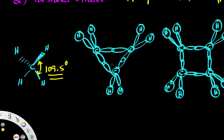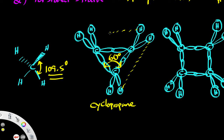With cyclopropane we have an internal angle of approximately sixty degrees, which is going to be much lower than our desired one hundred and nine point five. So this is definitely going to have Baeyer strain. We also have a little bit of eclipsing interactions as well. The main source of strain on cyclopropane is Baeyer strain, but there is also minimal strain coming from the eclipsing interactions.